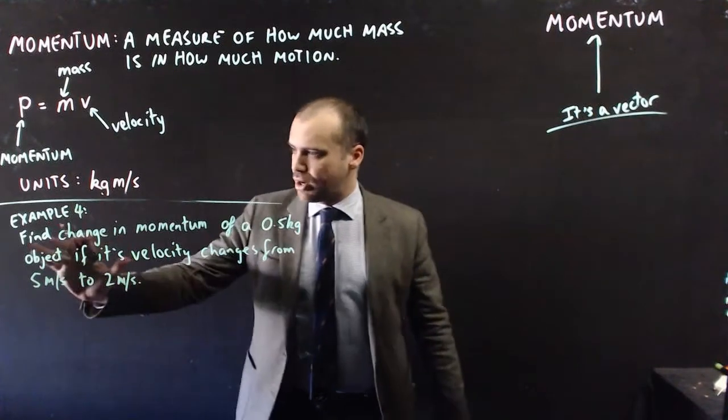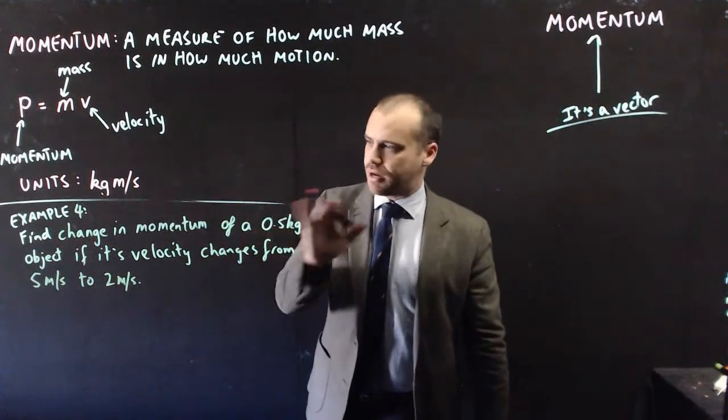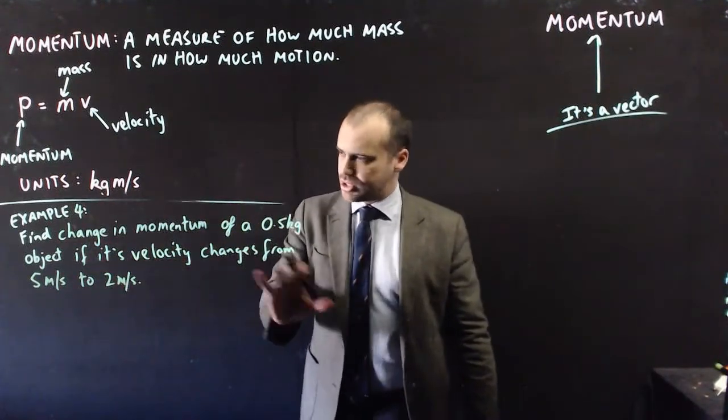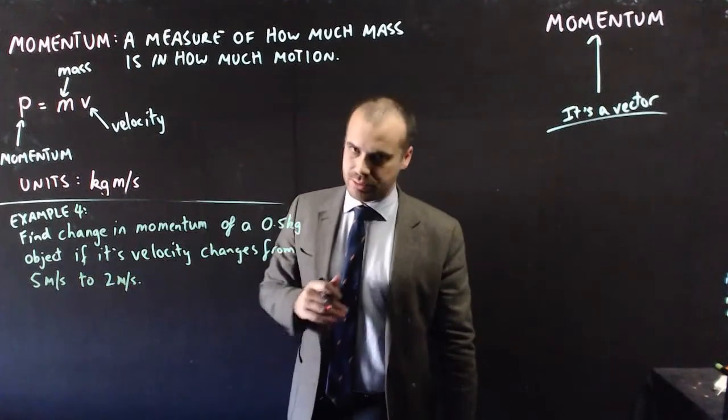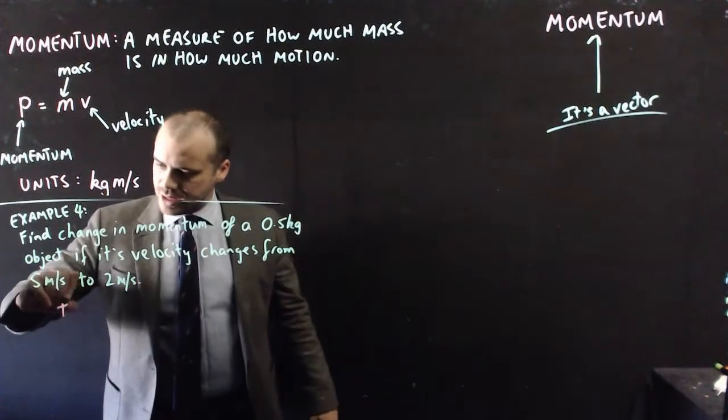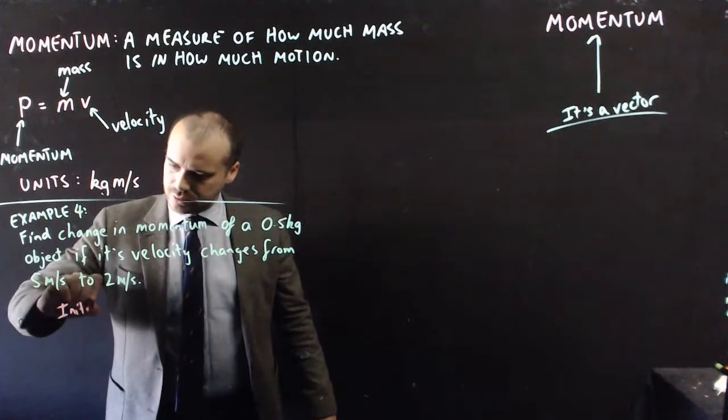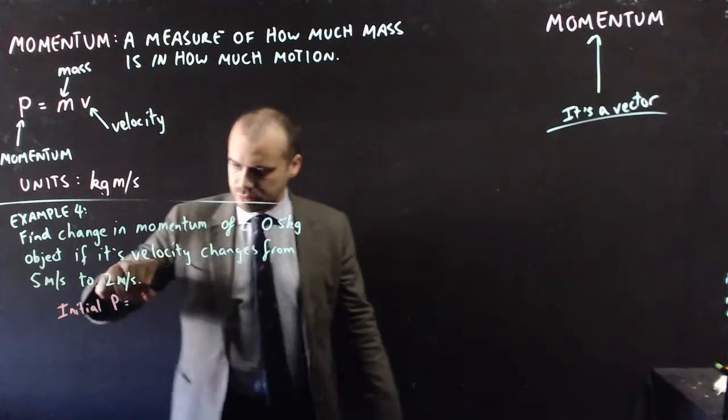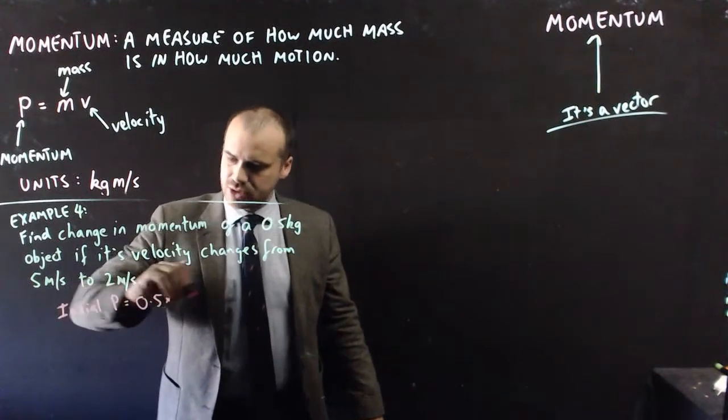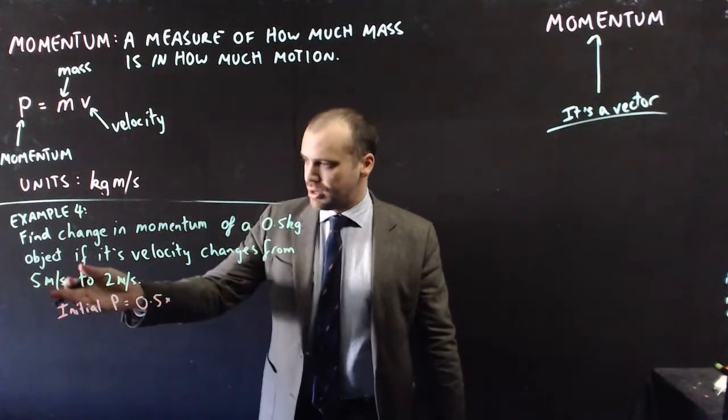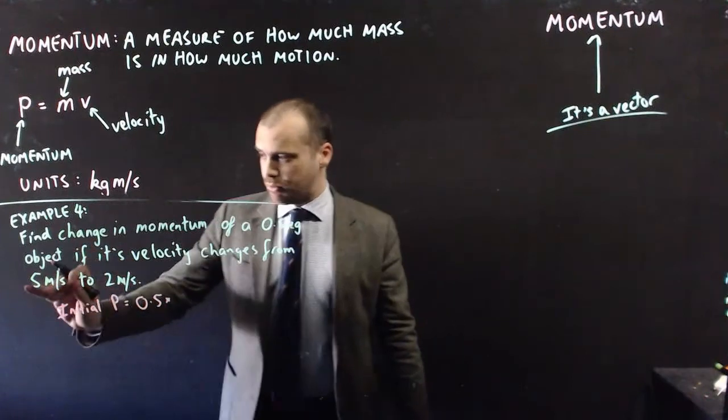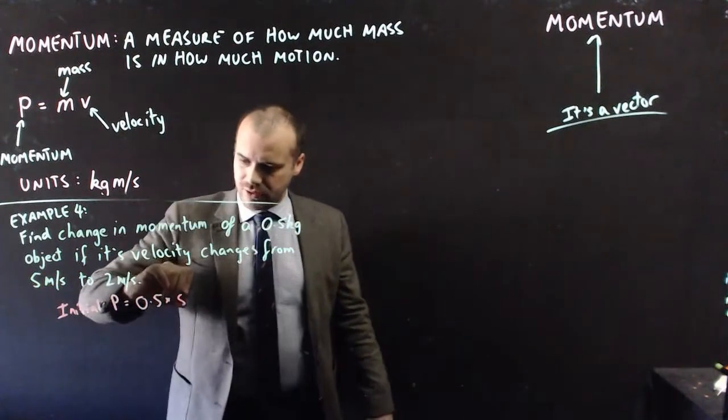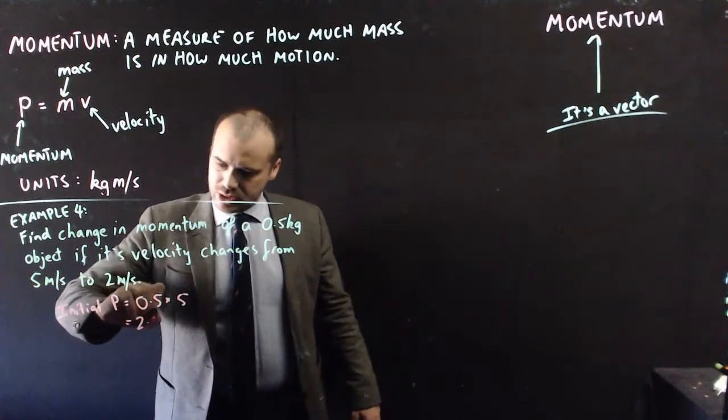We'll finish off with one more example. Find the change in momentum of a half kilogram object if its velocity changes from 5 meters per second to 2 meters per second. Its initial momentum equals its initial mass, 0.5, times its initial velocity. Remember, it's a vector, but we're using the magnitude of the vector here: 5. So its initial P is 2.5.